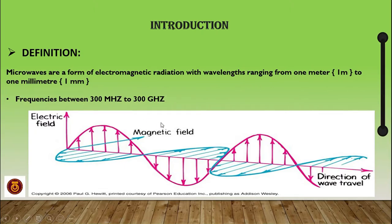As you can see here in this graph, this is the representation of a microwave wave. This wave represents the electrical field and this wave represents a magnetic field. So it's a combination between magnetic and electric field.